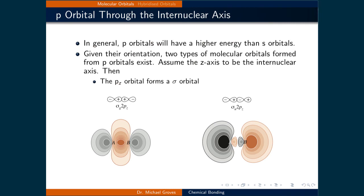In general, p orbitals will have a higher energy than s orbitals. Given the orientation of p orbitals, two types of molecular orbitals formed from p orbitals exist. Let's assume that the z-axis is the internuclear axis, meaning that it goes through both nuclei. Then the pz orbital forms a sigma bond since the wave function solutions directly overlap.